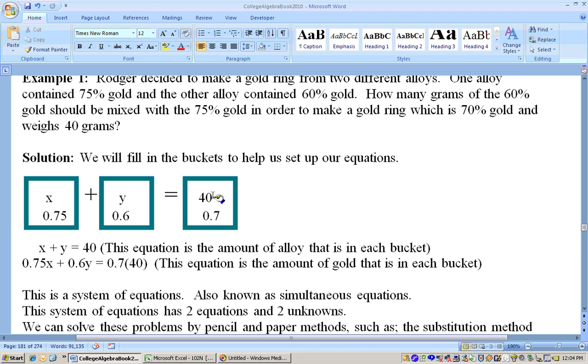Well this is a typical mixture problem here. With a mixture problem, we have two unknowns. And if you have two unknowns, you have to have two equations to solve it. One equation is based on the amount of alloy in each bucket. X grams of this alloy plus Y grams of this alloy in this bucket has to add up to 40 grams total.